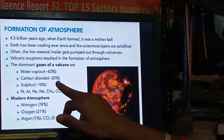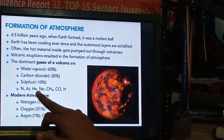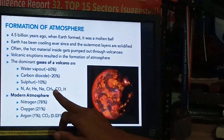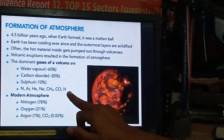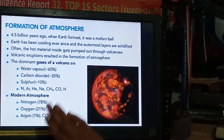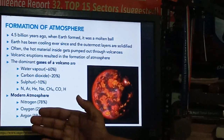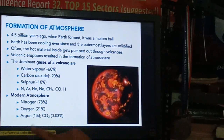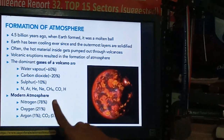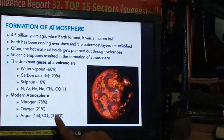When the Earth was formed, so many volcanoes were bursting and pumping liquid outside. This liquid would flow, get cooled, and become solidified — in this way the surface of the Earth was formed. The dominant gases present on the early Earth were water vapors at about 60%, carbon dioxide at about 20%, sulfur at about 10%, and the remaining 10% was nitrogen, argon, helium, neon, CH4, carbon monoxide, and hydrogen.